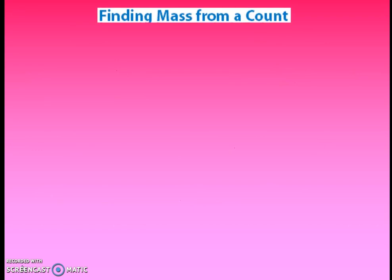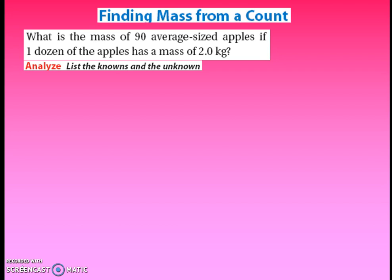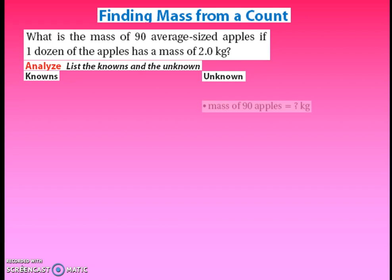Let's look at how we can relate two different measurements of apples — we're going to relate mass with count. The problem: 90 average-sized apples, and one dozen apples has a mass of two kilograms. How can we associate mass and amount? We're going to analyze this problem, identify what information is given, and figure out what we know and what we don't know. What is the mass of 90 average-sized apples? 'What' is the question word, so we know that's what we're trying to find — the mass in kilograms.